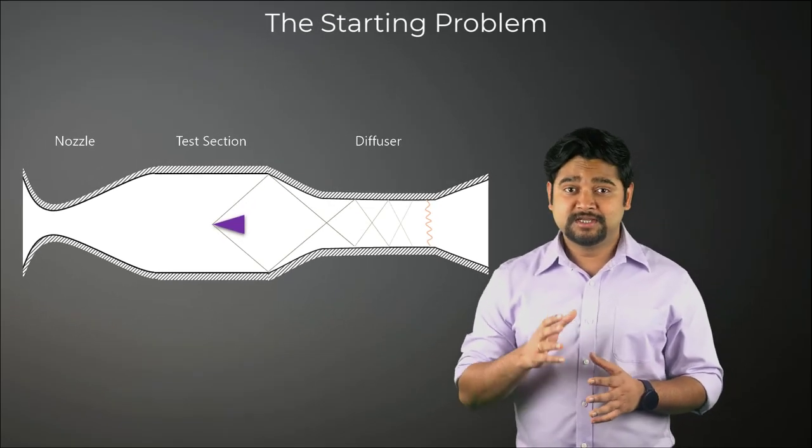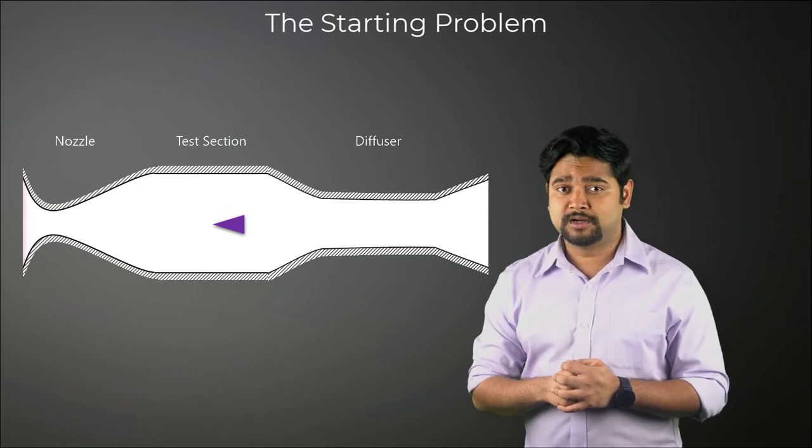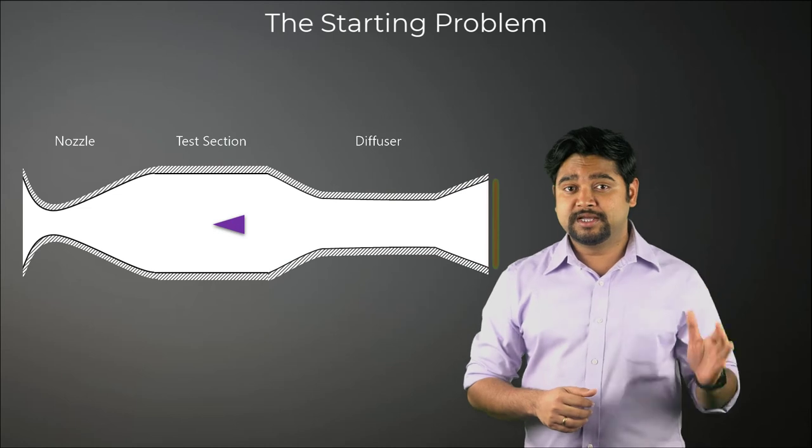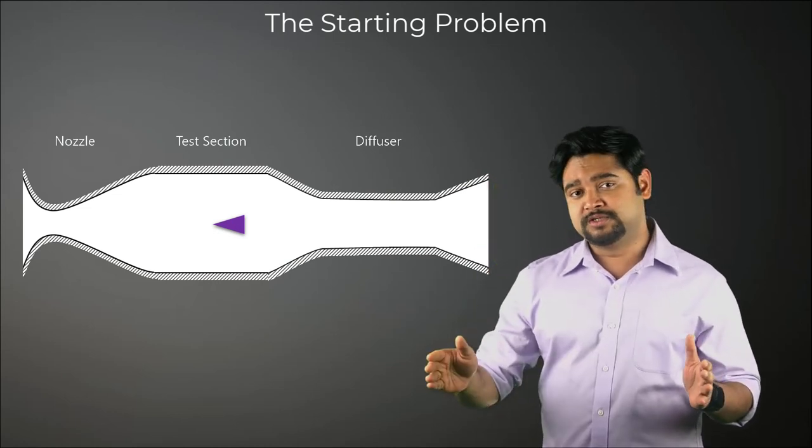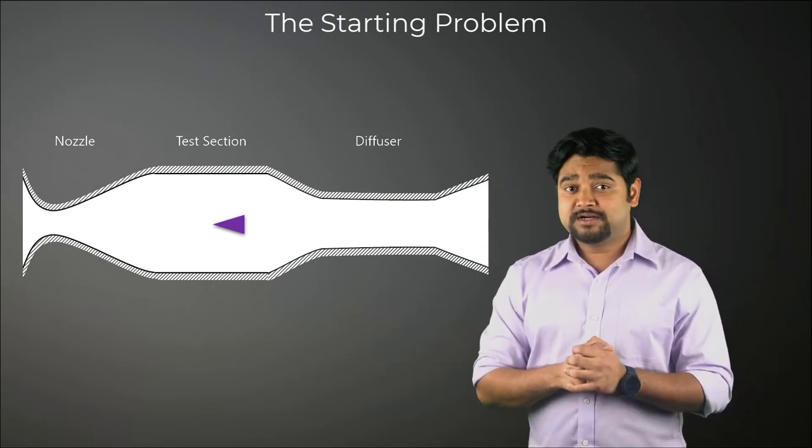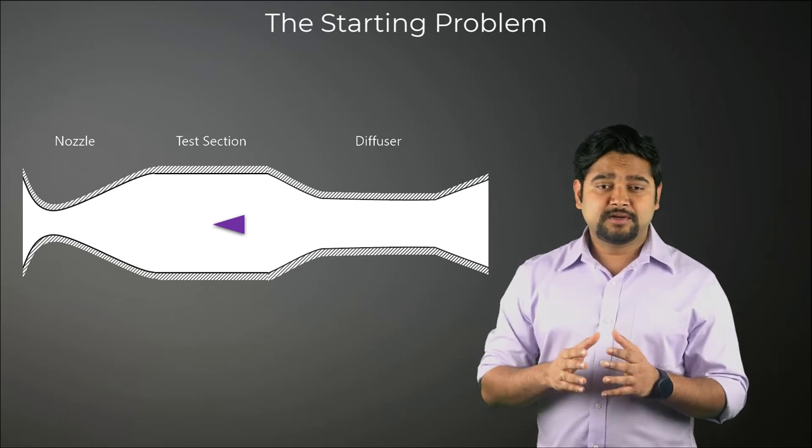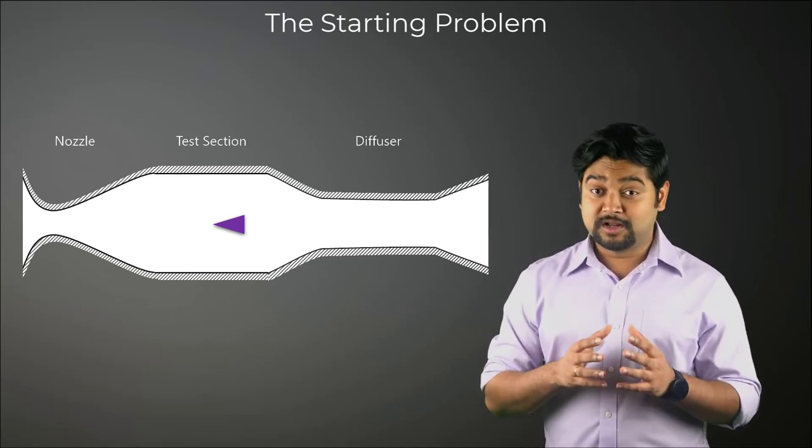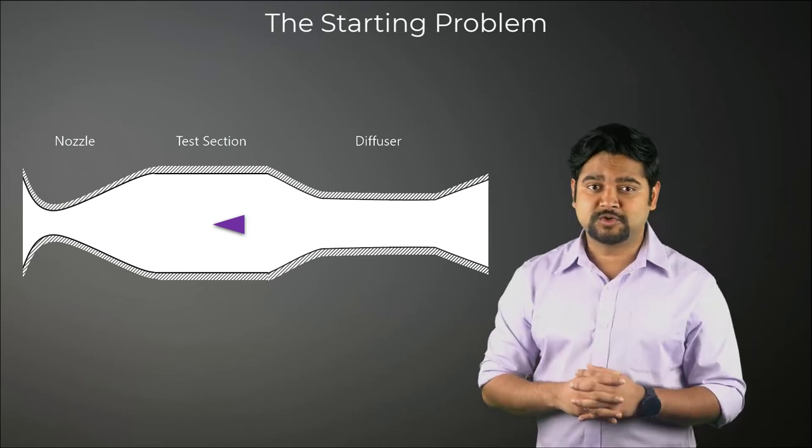In most cases, the starting process is usually accompanied by a normal shockwave traversing through the entire duct, from the nozzle entrance all the way to the diffuser exit. When this starting shockwave is at the inlet to the diffuser, the second throat area must be large enough to allow the passage of the mass flow behind a normal shock.